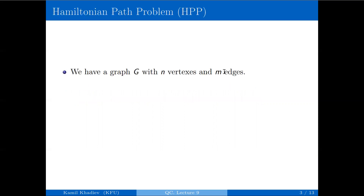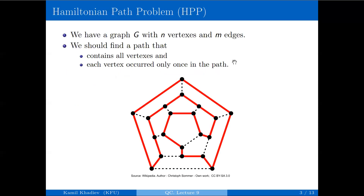First, let us discuss the problem itself. The Hamiltonian path problem is the following: we have a graph of n vertices and n edges. We should find any path that contains all vertices of the graph, and each vertex should occur exactly once in this path. If a path starts in some vertex and finishes in the same vertex, then it is called a Hamiltonian cycle.